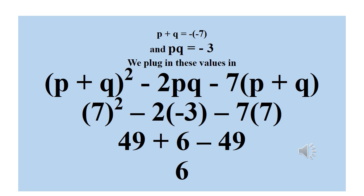So we now have: 7 squared is 49, then minus times minus is plus, 2 times 3 is 6, then minus 7 times positive 7 is minus 49. Simplifying: plus 49 minus 49 cancel out, leaving plus 6. So 6 is the final answer for this particular question.